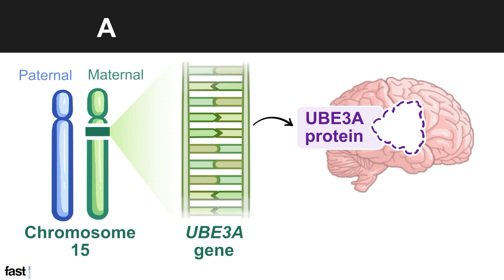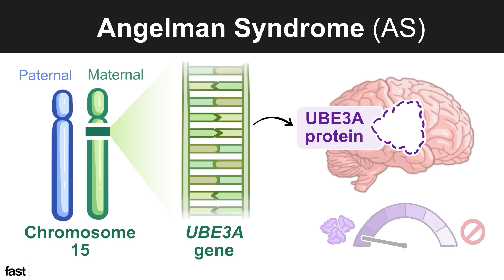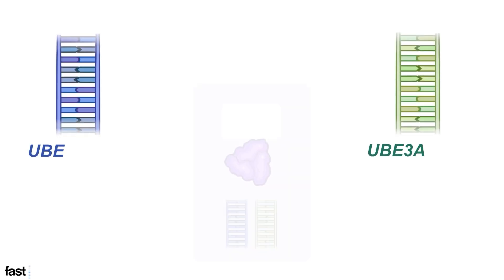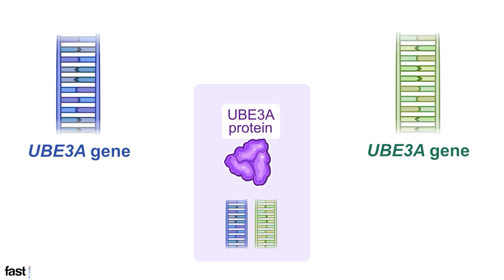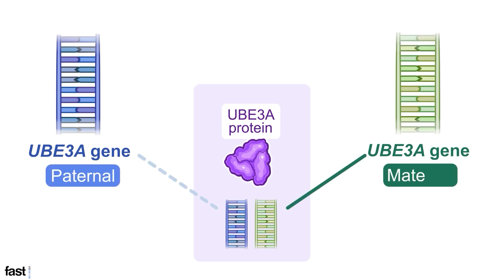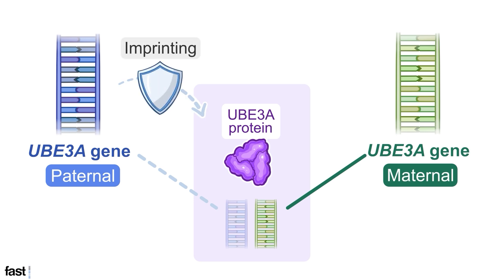People living with Angelman Syndrome, or AS for short, do not have enough functional UBE3A protein in their brains. Typically, each person has two copies of the UBE3A gene, one from each parent. The one from the father is called paternal, and the one from the mother is called maternal. In all people, the paternal UBE3A gene is silenced or turned off in brain cells, a process called imprinting.